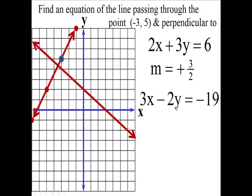So the equation is 3x minus 2y equals negative 19. This part tells you the slope is 3 halves, and this part tells you that it went through that point. This is the equation of the line that's perpendicular, because it has the slope of 3 halves and is perpendicular to the original line, and it goes through the point negative 3, 5.